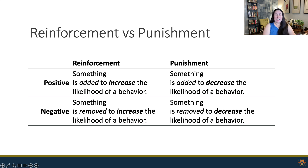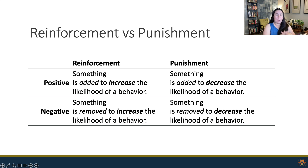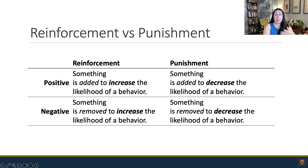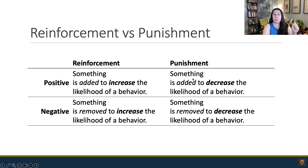There's also punishment in behaviorism. Reinforcement is something added or removed to increase a behavior — in both positive and negative instances, we are increasing the likelihood of a behavior. In contrast, punishment is used to decrease behaviors. Positive punishment adds something to decrease a behavior. Negative punishment removes something to decrease the likelihood of a behavior.